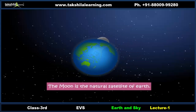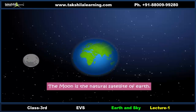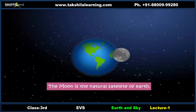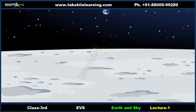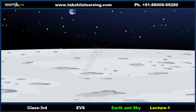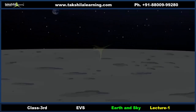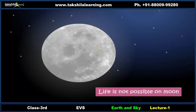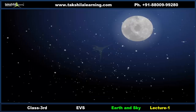Though the Moon is the natural satellite of Earth, it is very different from Earth. There is no air, water, or food on the Moon. Therefore, life is not possible on it.